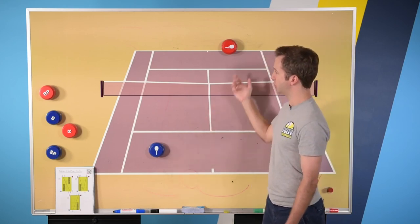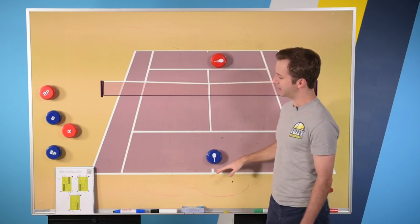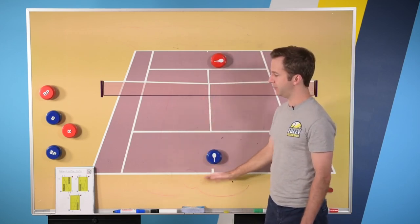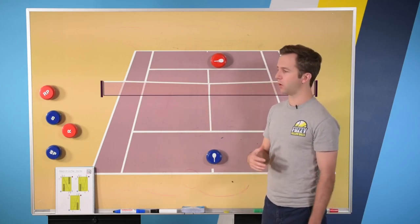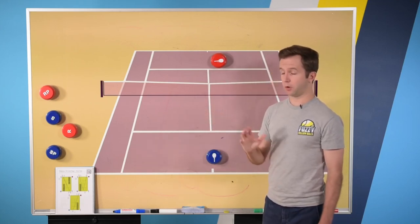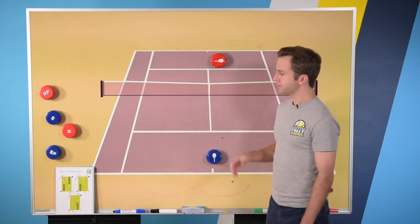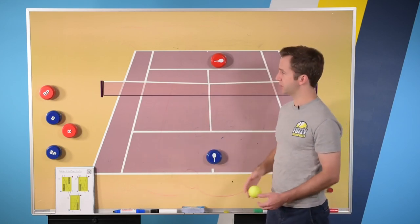Basically the way the drill works is you and your partner as you're rallying have to stand inside the baseline, hit everything inside the baseline. You're not allowed to back up. So that's one way to work on taking the ball either early, which is certainly an option, hard to do, or just taking it clean out of the air.